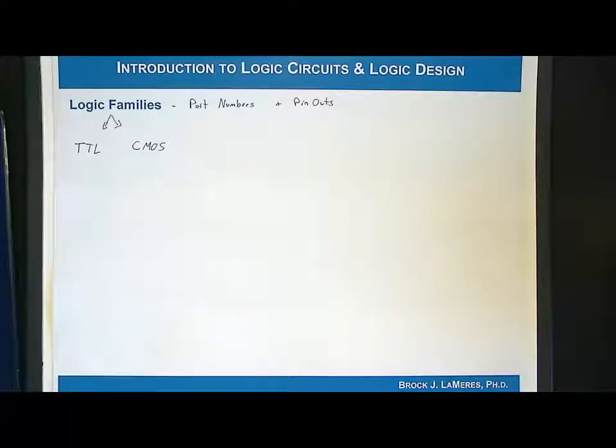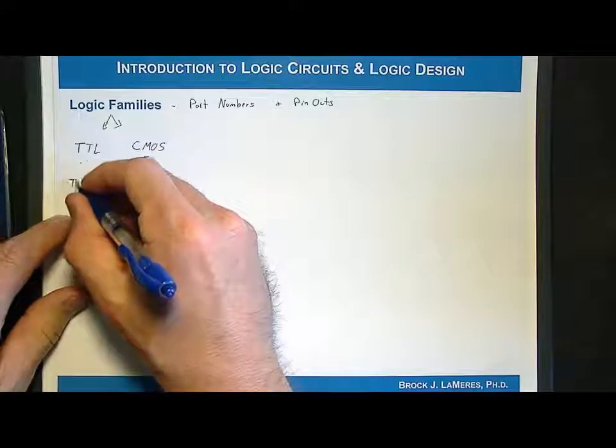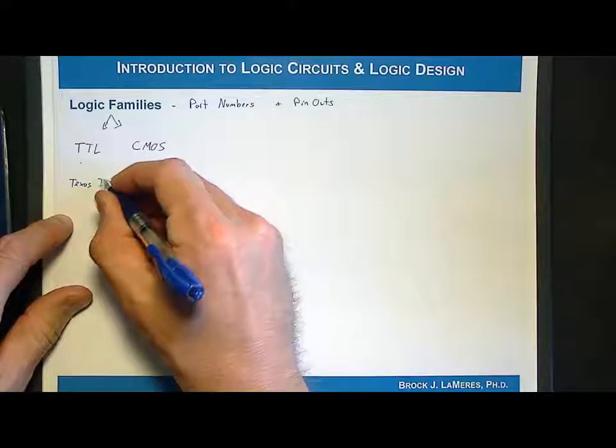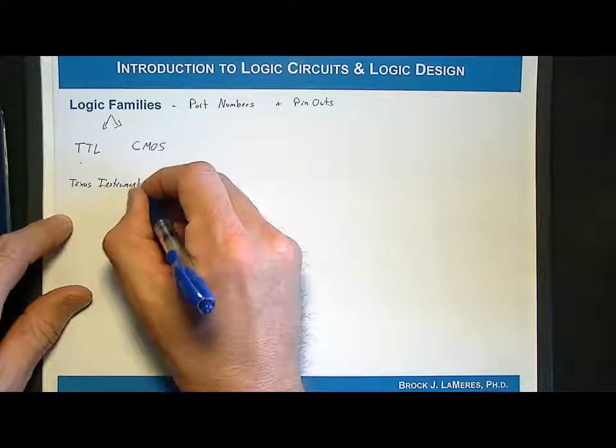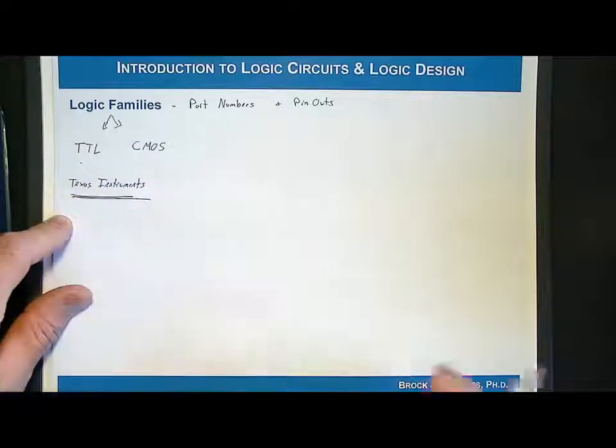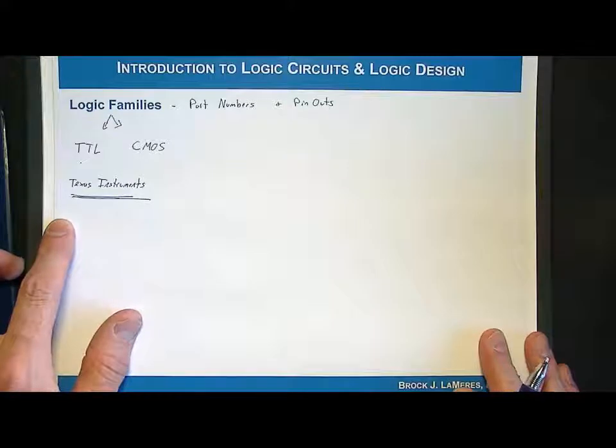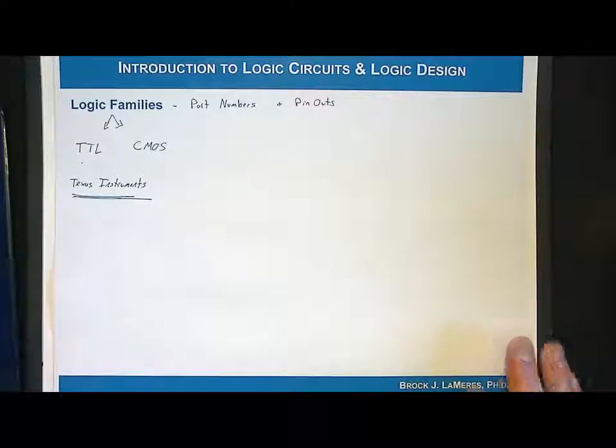Since TTL was the first, the first company that came out with this logic family was Texas Instruments. They were the first to create these broadly adopted logic or set of parts, which were the logic families that everybody started using. So they were in charge and got the right to come up with numbering schemes. The numbering schemes are actually still in use today.